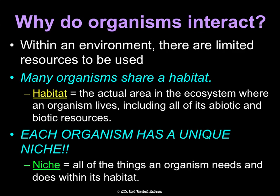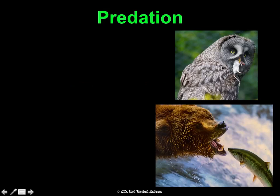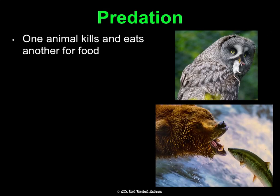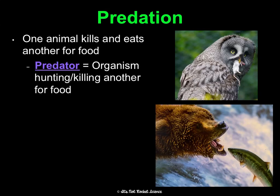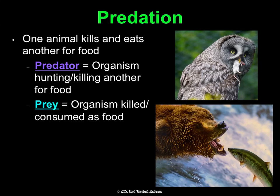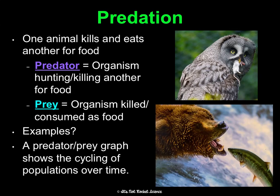Because organisms can't share a niche, and because they do share a habitat, this creates different dynamics. The first relationship is predation — it's not even really a long-term relationship. Predation is when one organism kills and eats another for food. The predator is the one hunting or killing; the prey is what's being killed or consumed. Examples include an owl as predator and mouse as prey, a bear as predator and fish as prey. A predator-prey graph shows the cycling of populations over time and how predators and prey respond to each other.